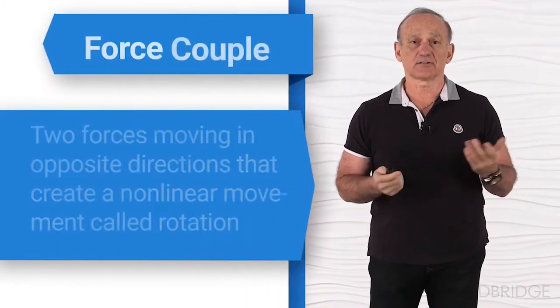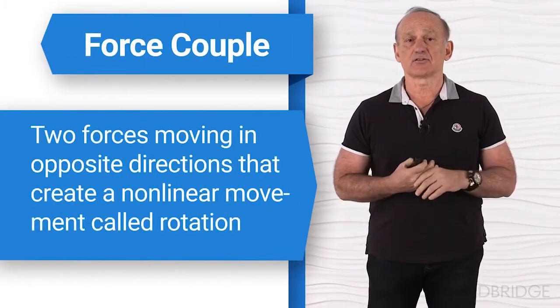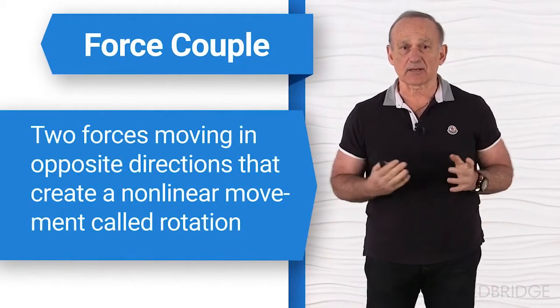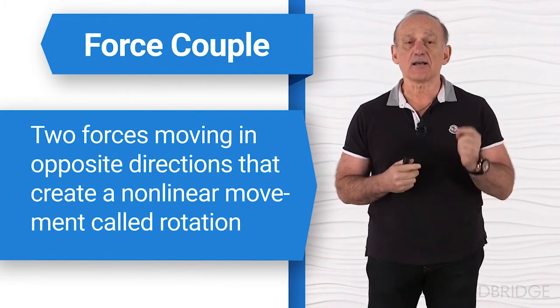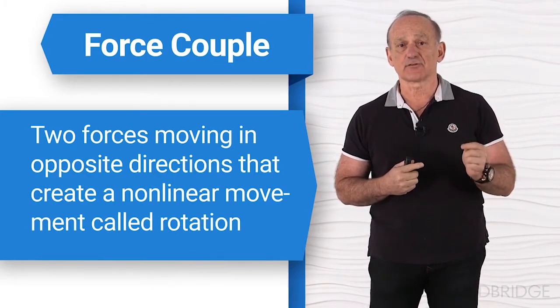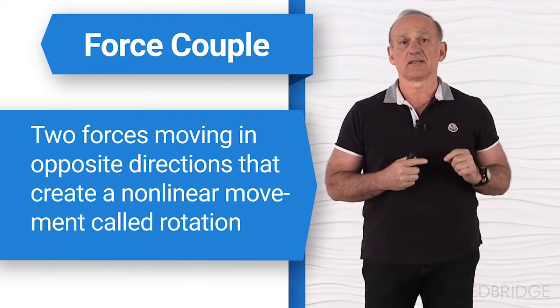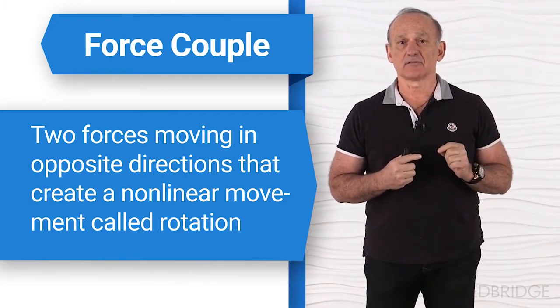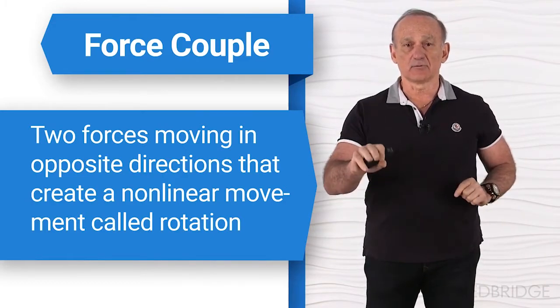A force couple is defined as two forces moving in opposite directions that create a nonlinear movement, which is referred to as rotation. The best example is to sit in a tube in a pool and move one hand this way and the other hand that way in the water. You rotate and spin around — you don't go anywhere. This is a force couple, and that's what the shoulder has: two force couples.